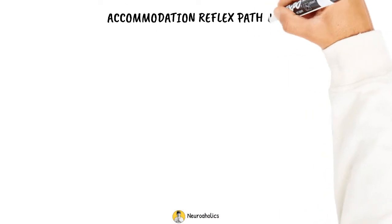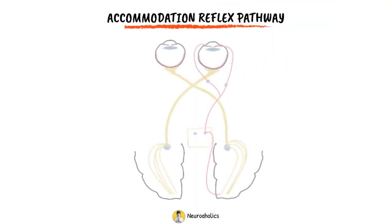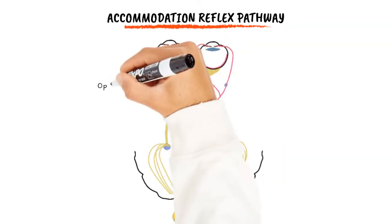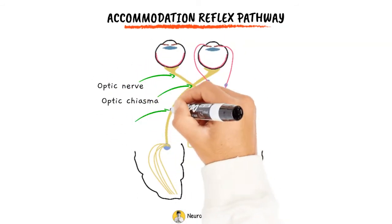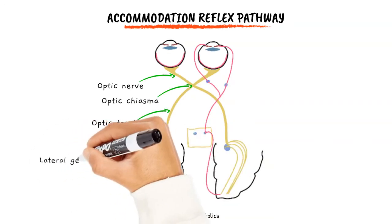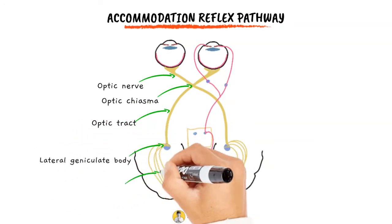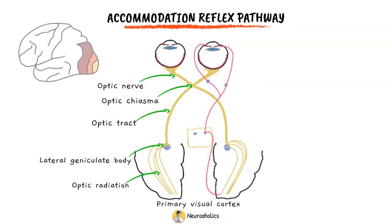Next is the accommodation reflex pathway. The afferent starts from the retina. Impulses go from the rods and cones to the optic nerve, optic chiasma, and optic tract. Fibers then pass to the lateral geniculate body, optic radiations, and striate cortex. The impulses reach area 19 of the occipital cortex.